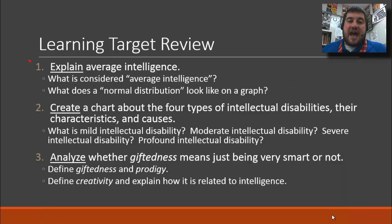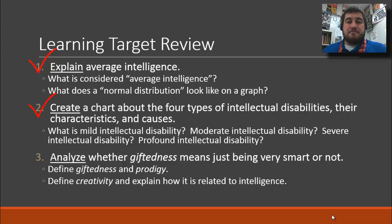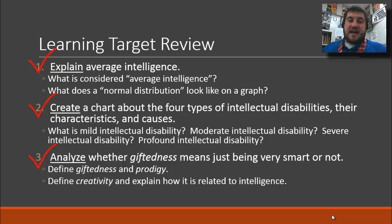To review our learning targets: we discussed average intelligence — an IQ score of 100 — and the normal distribution as a bell curve on a graph. We covered mild, moderate, severe, and profound intellectual disabilities, and analyzed the terms gifted, prodigy, and creativity. That is the end of this unit — be prepared for your quiz and the unit exam coming up.